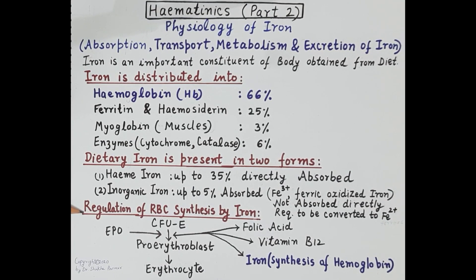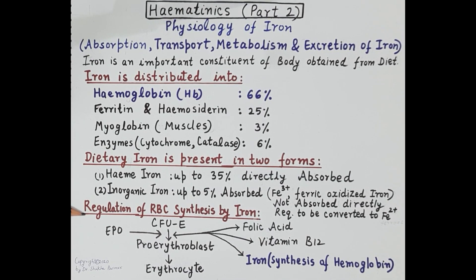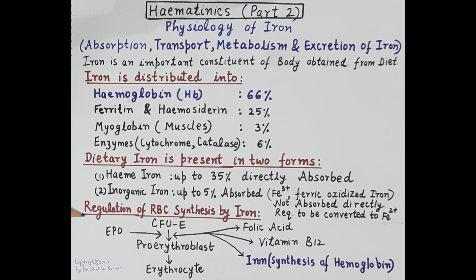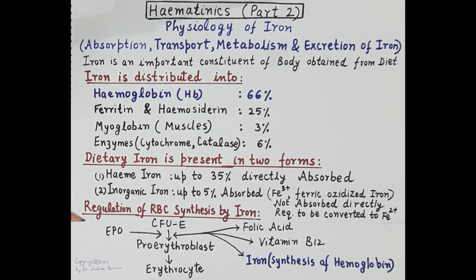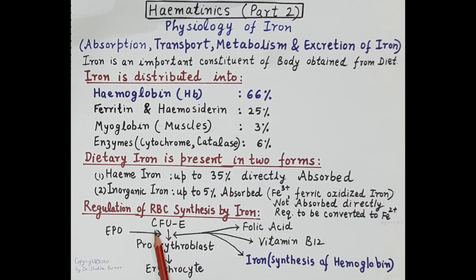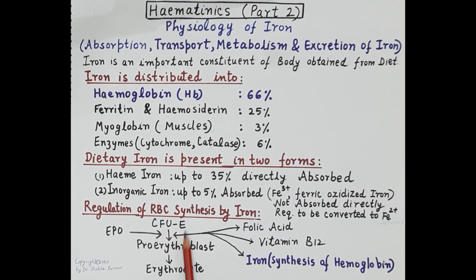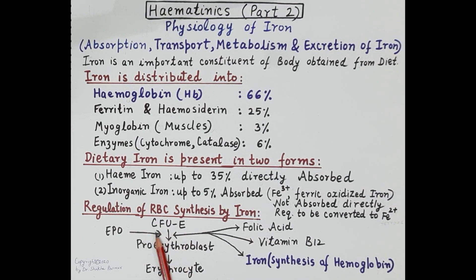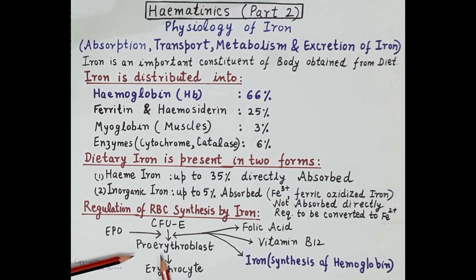The process of formation of RBCs in the bone marrow is called erythropoiesis. Iron is required for the formation of hemoglobin, and deficiency of iron results in iron deficiency anemia. As shown in this schematic diagram, the colony-forming unit of the erythroid series — the precursors of RBCs — are stimulated by erythropoietin, and they develop into proerythroblasts.